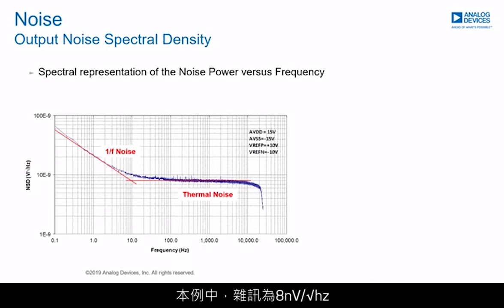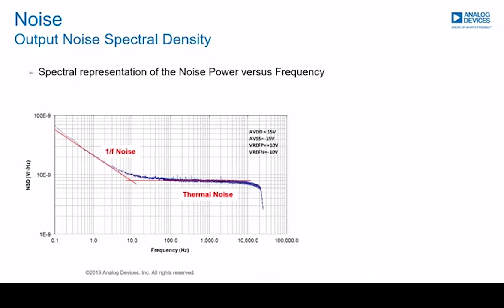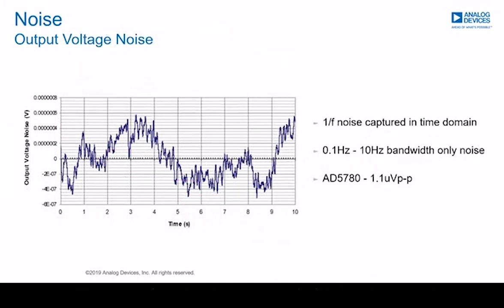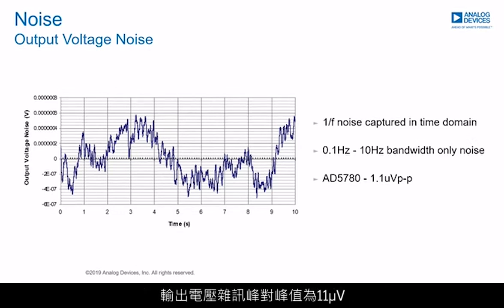In this case, the noise is 8 nV per root hertz, making it ideally suited for high-precision, ultra-stable applications. The 1/f noise region extends up to 10 Hz, and the thermal noise dominates at higher frequencies. The peak-to-peak noise plot is measured only in the 0.1 Hz to 10 Hz frequency range — for the AD5780 18-bit DAC, the output voltage noise is 1.1 microvolt peak-to-peak.